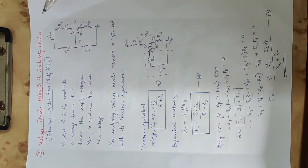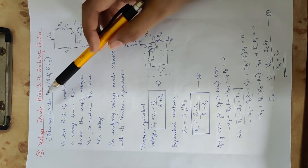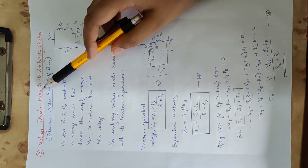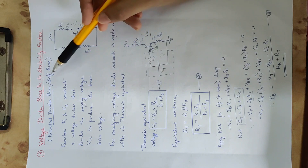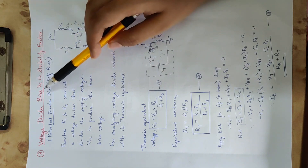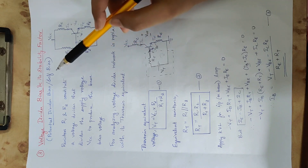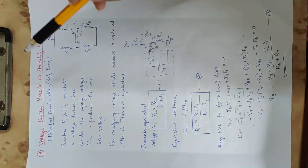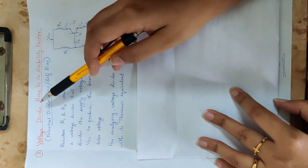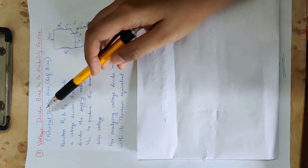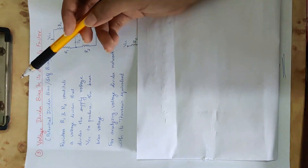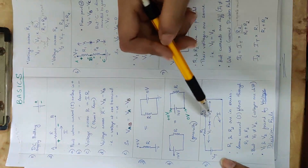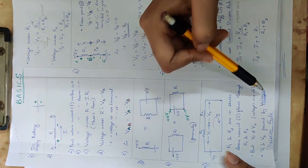The third biasing circuit is voltage divider bias. It has different names: it is also known as potential divider bias or self bias circuit. We will learn the voltage division rule and apply it to this circuit.